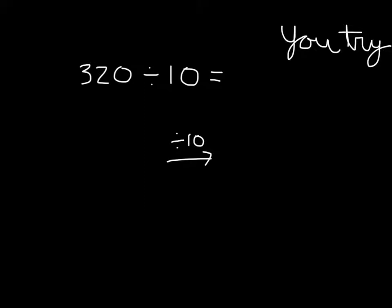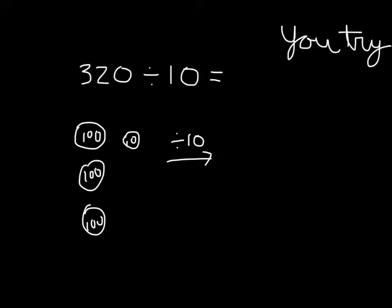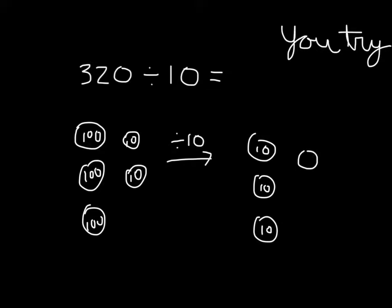Did you set up the problem correctly? We take apart 320 into its unit form — we'd have three hundreds disks and two tens disks. Then we divide each of those by 10. 100 divided by 10 is 10, and that would be three of those. Then we'd have two where 10 divided by 10 equals 1. So our answer is 32.